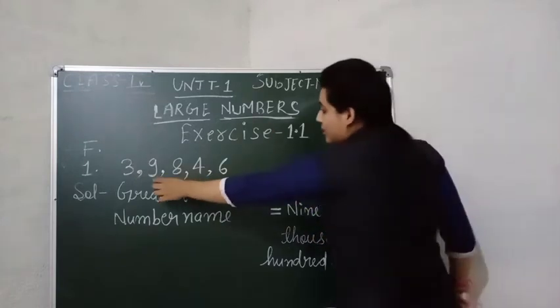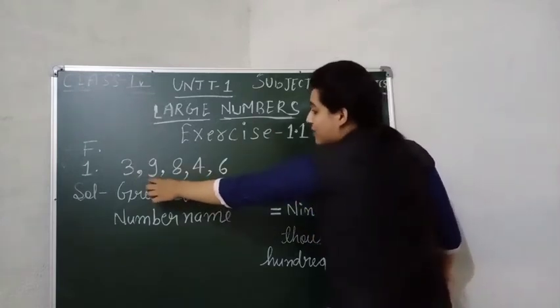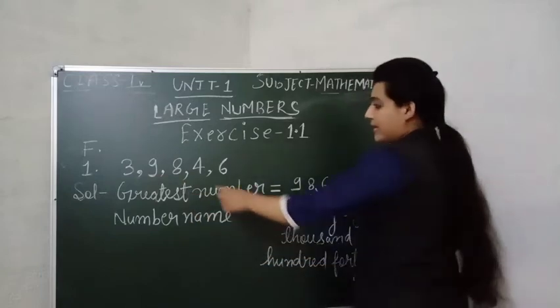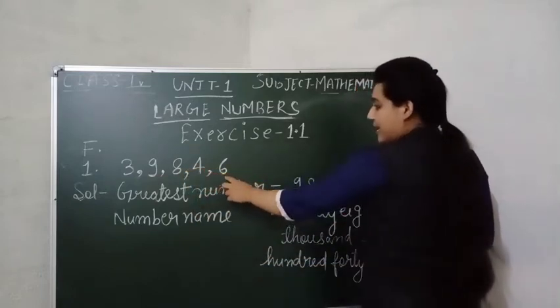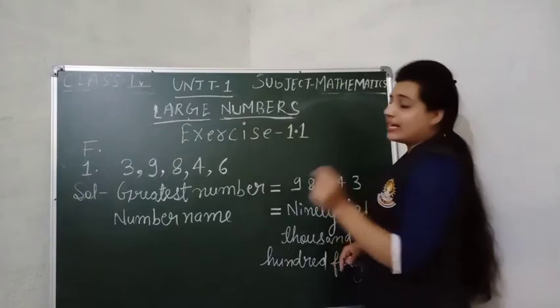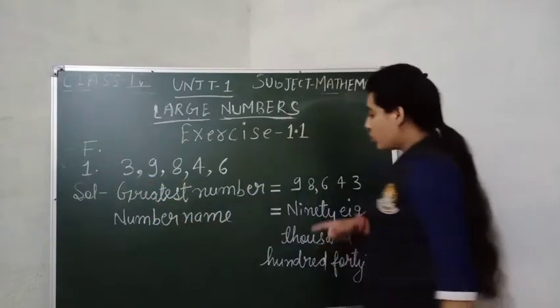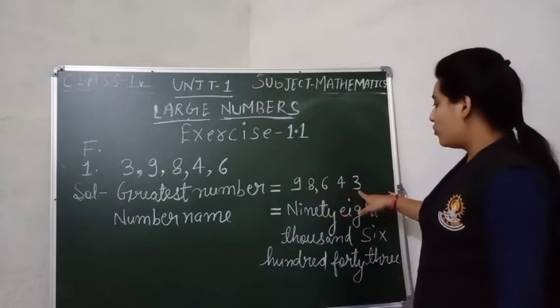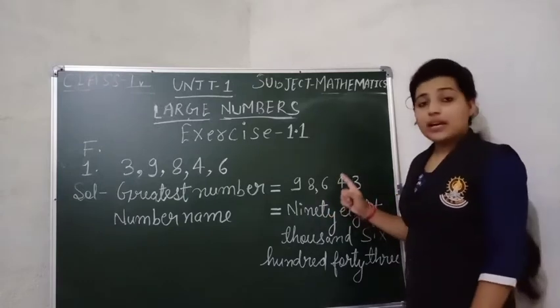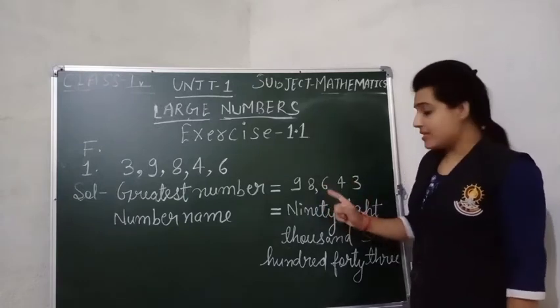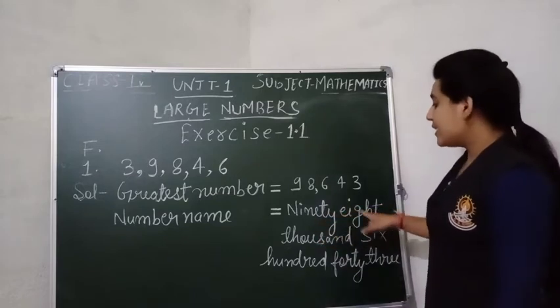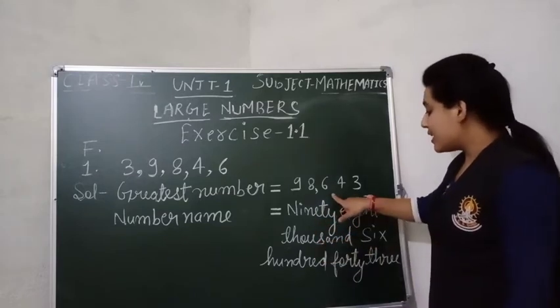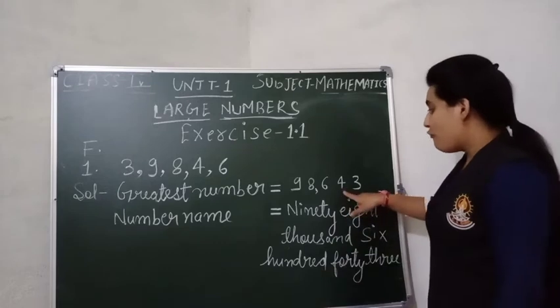First, the greatest number we have is 9, then 8, then 6, then 4, and at last 3. So here we get the number 98,643. And the number name of this number is ninety-eight thousand, six hundred forty-three.